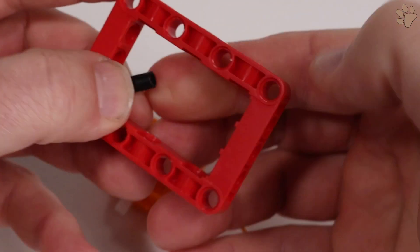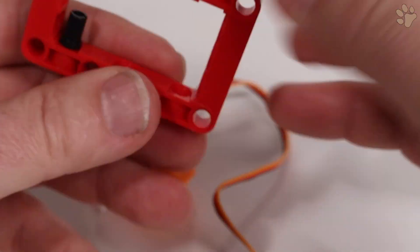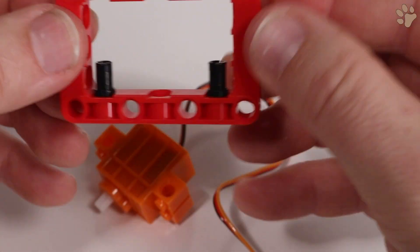Repeat the same steps for the second servo, only this time make sure to put the servo in upside down compared to the first one.